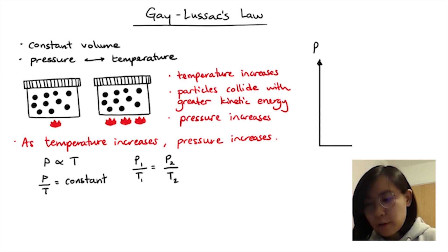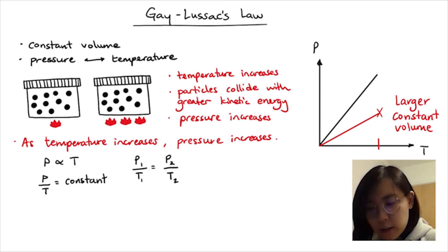This gives us a linear graph. And if the volume of the gas is now larger, for the same temperature as before, we're going to get a smaller pressure so the gradient becomes less steep.